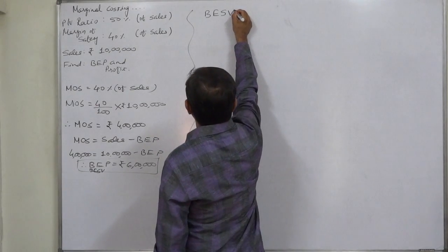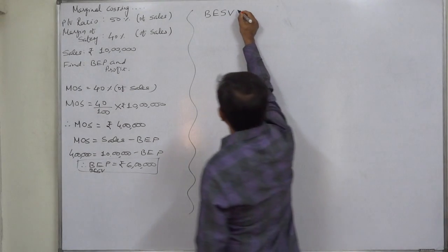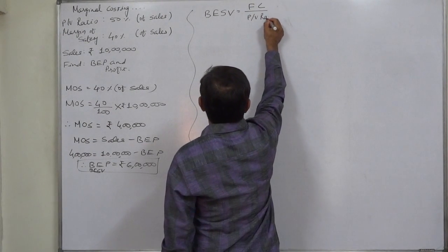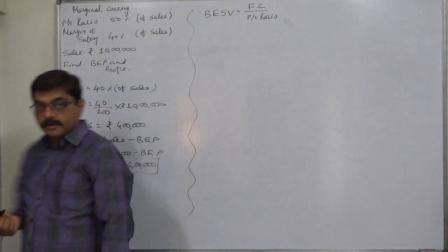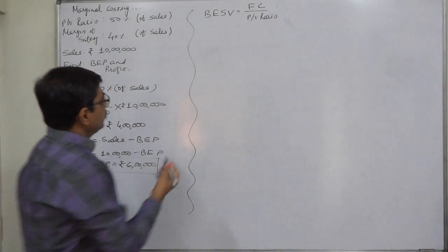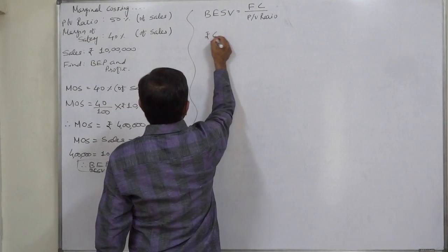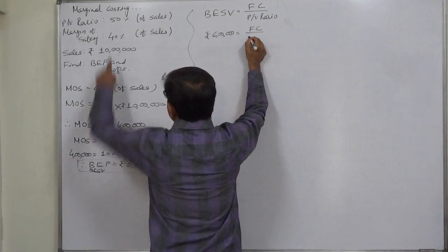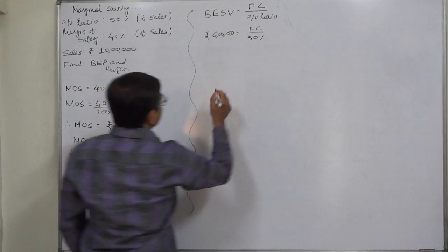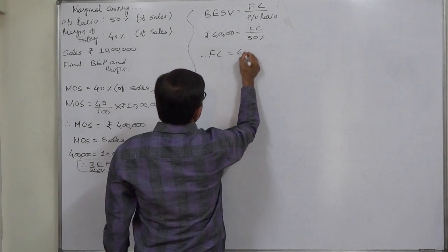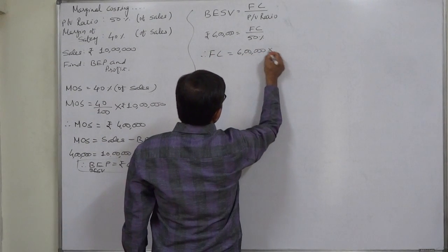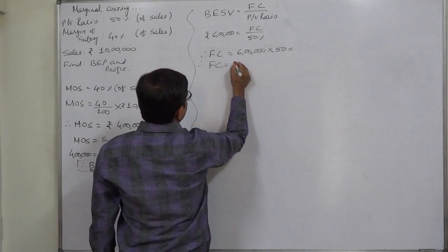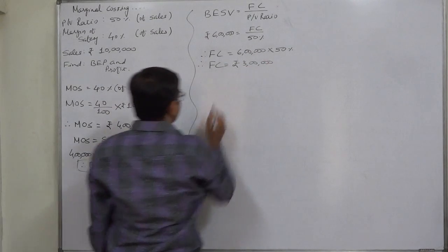Break-even sales quantity means fixed cost upon contribution per unit. But if we want to calculate directly the break-even sales value, the formula will be fixed cost means total fixed cost upon PV ratio. Break-even sales value comes to rupees 6 lakh or 600,000. Fixed cost is missing. PV ratio is given to be 50%. So fixed cost comes to 50% of 600,000 or 6 lakh. So the fixed cost or total fixed cost comes to rupees 300,000 or 3 lakh.